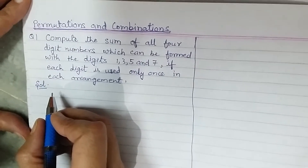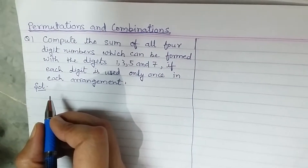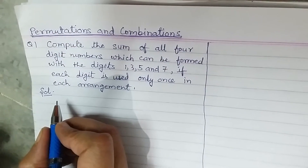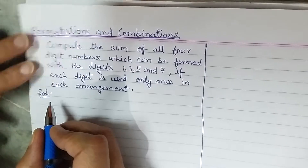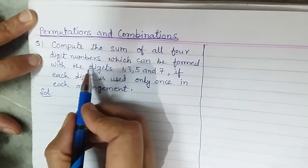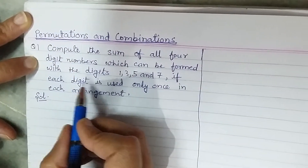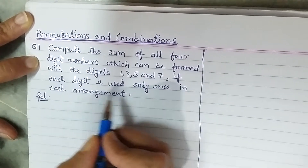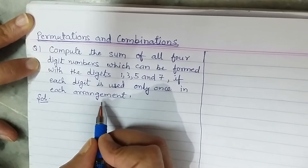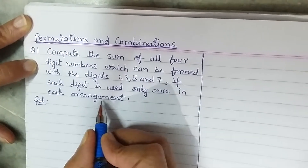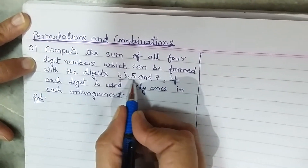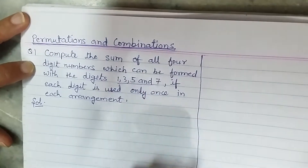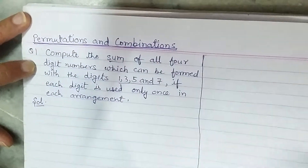Hello friends, today I am sharing an easy way of solving difficult problems of permutation and combination. The problem is: compute the sum of all four-digit numbers which can be formed with the digits 1, 3, 5, and 7, if each digit is used only once in each arrangement. We have to write all the four-digit numbers and then compute their sum.